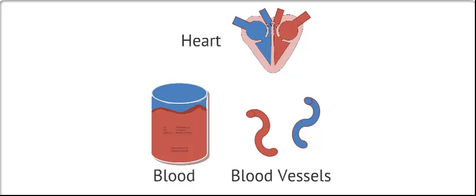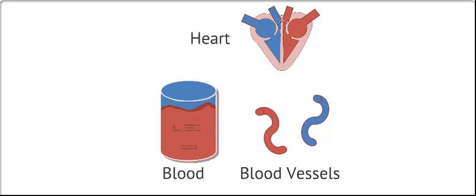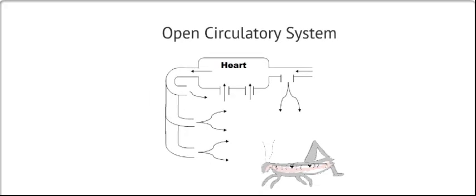There are two ways in which these components are organized. Circulatory systems can be open or closed. An open circulatory system has open-ended blood vessels, meaning that the fluid which is pumped into the blood vessels ends up emptying into the common body cavity. There is no difference between the blood and the interstitial fluid for these organisms.